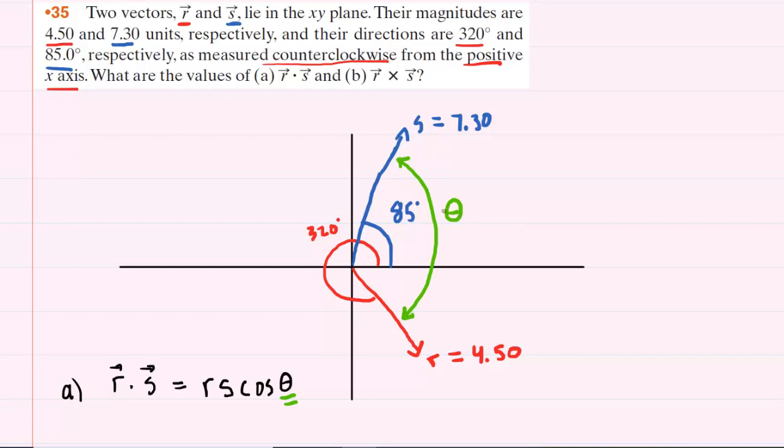That's going to be this angle right here. So whatever that value is, that will be the theta that we plug into our dot product formula. Notice, if you look carefully, that this angle right here would have to be 40 degrees.